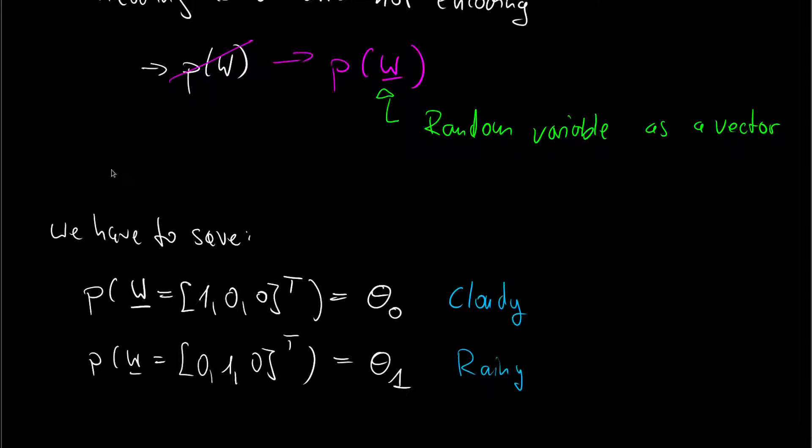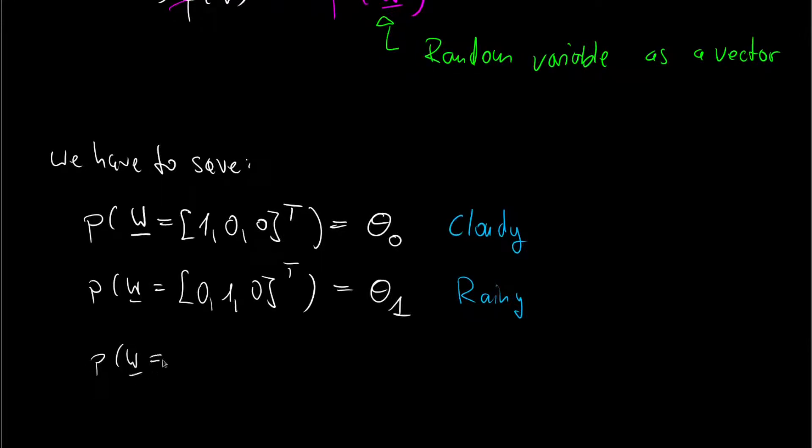And lastly, we have the probability of the weather vector being zero, zero, one, transpose. And this is theta two, the probability of sunny weather.